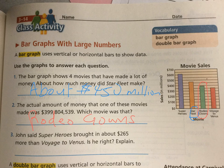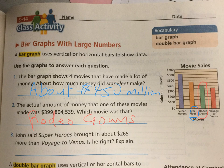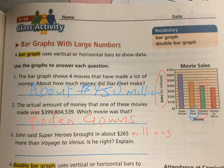Number three: John said Superheroes brought in about $265 more than Voyage to Venus. Is he right? Superheroes is the one in purple. The amount is about right when you look at the graph alone — from $350, $450, $550, and about $65 more than that. But the problem is, that's not just dollars. What we have here is sales in millions. If you added the word millions in the question, it would be correct. But he is not right, because you need that important word millions there.